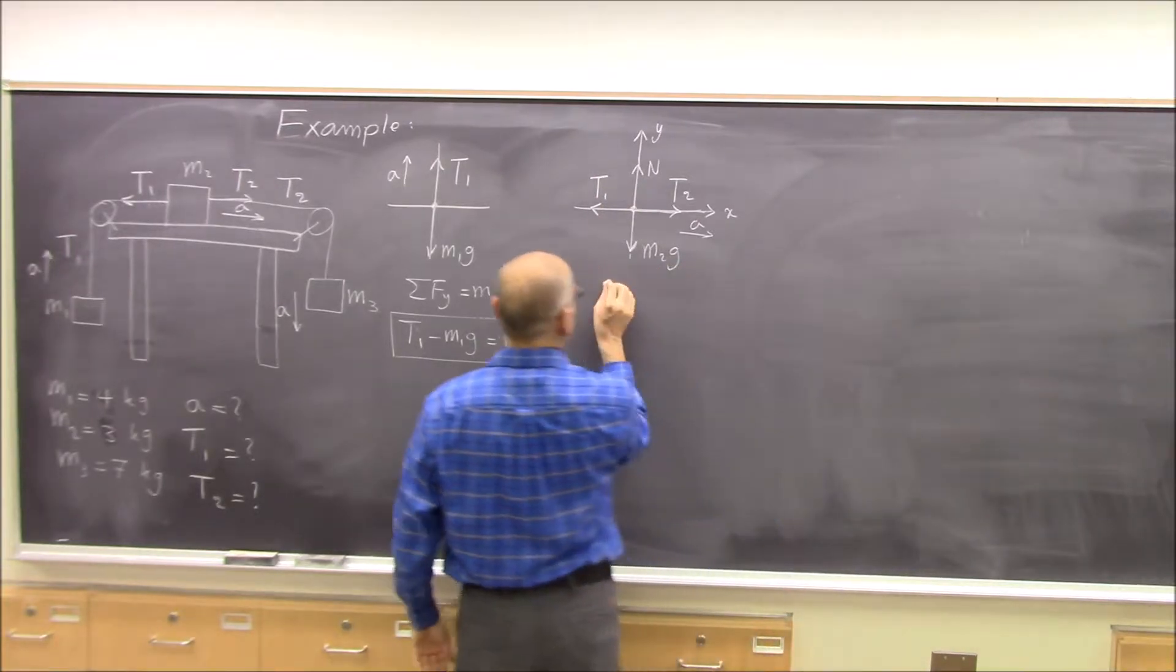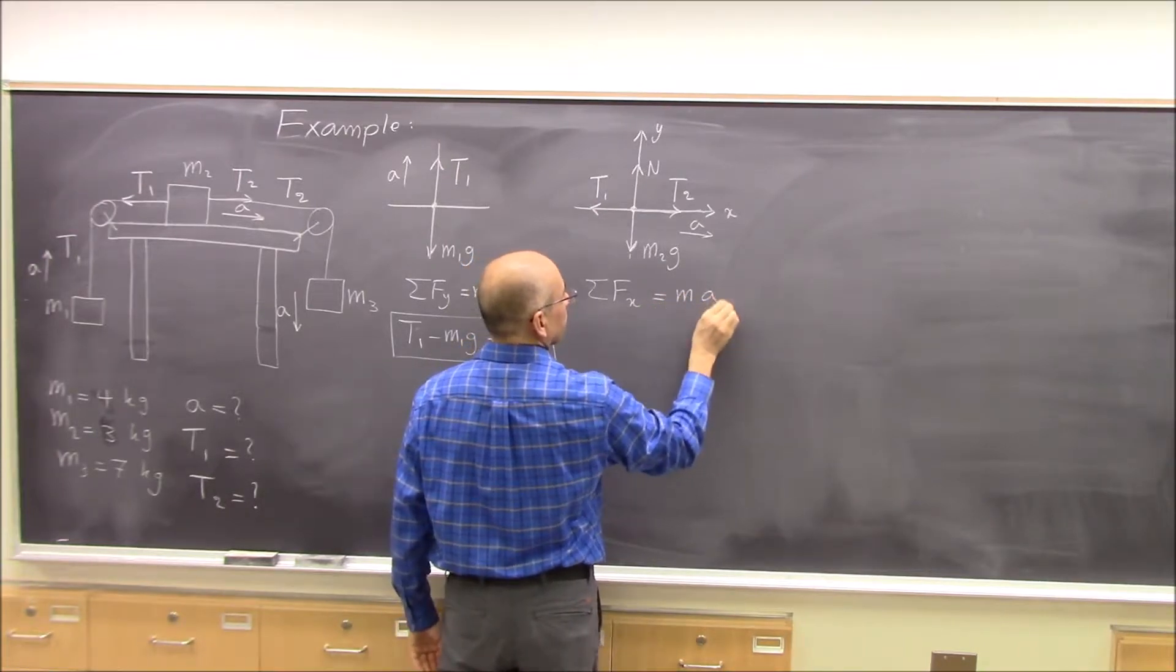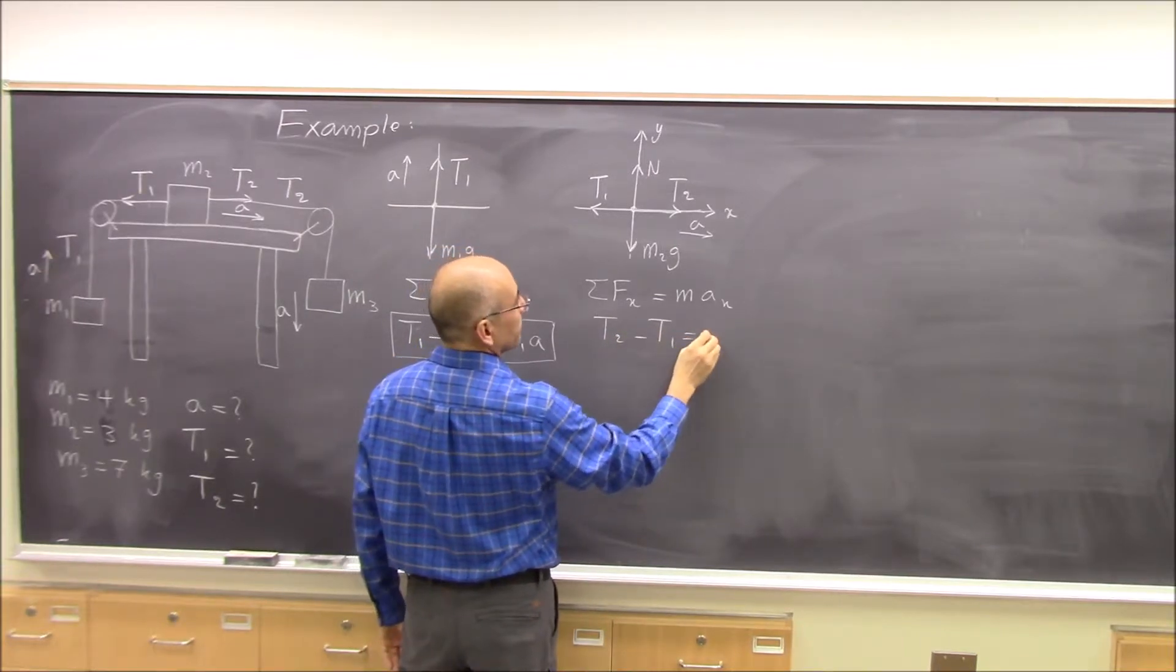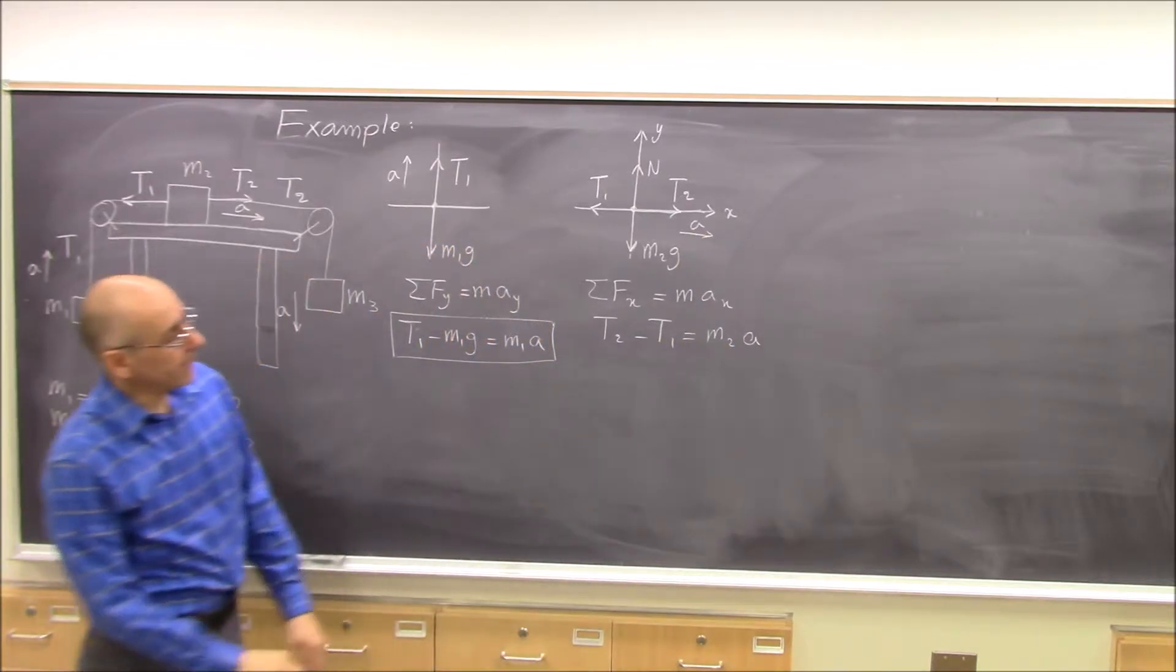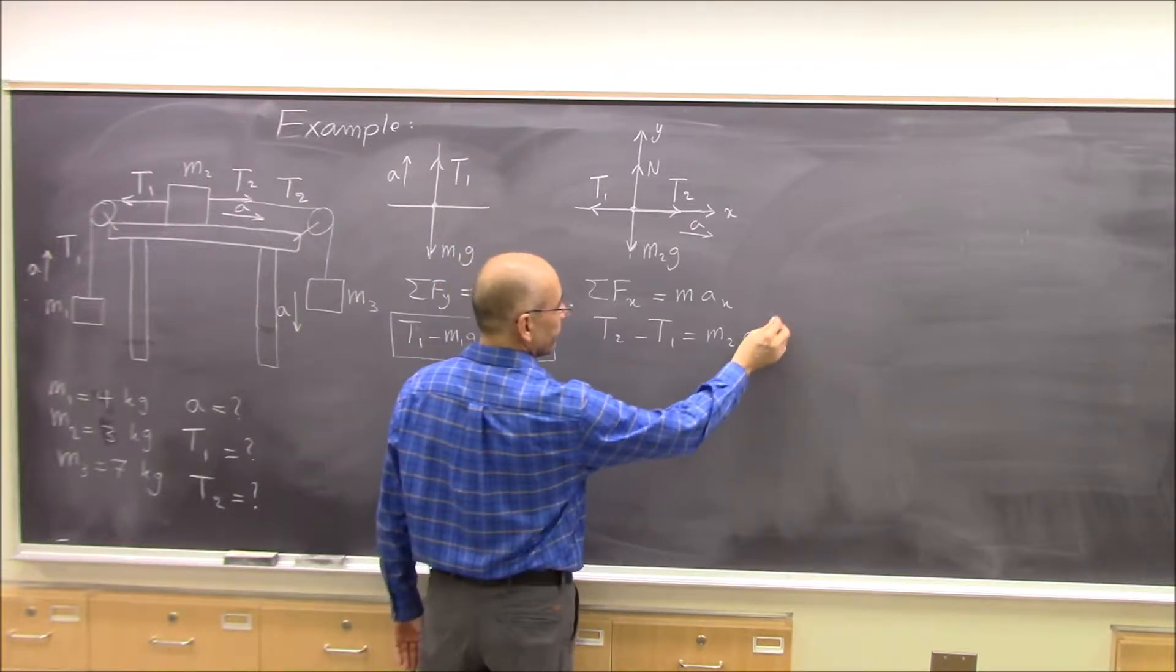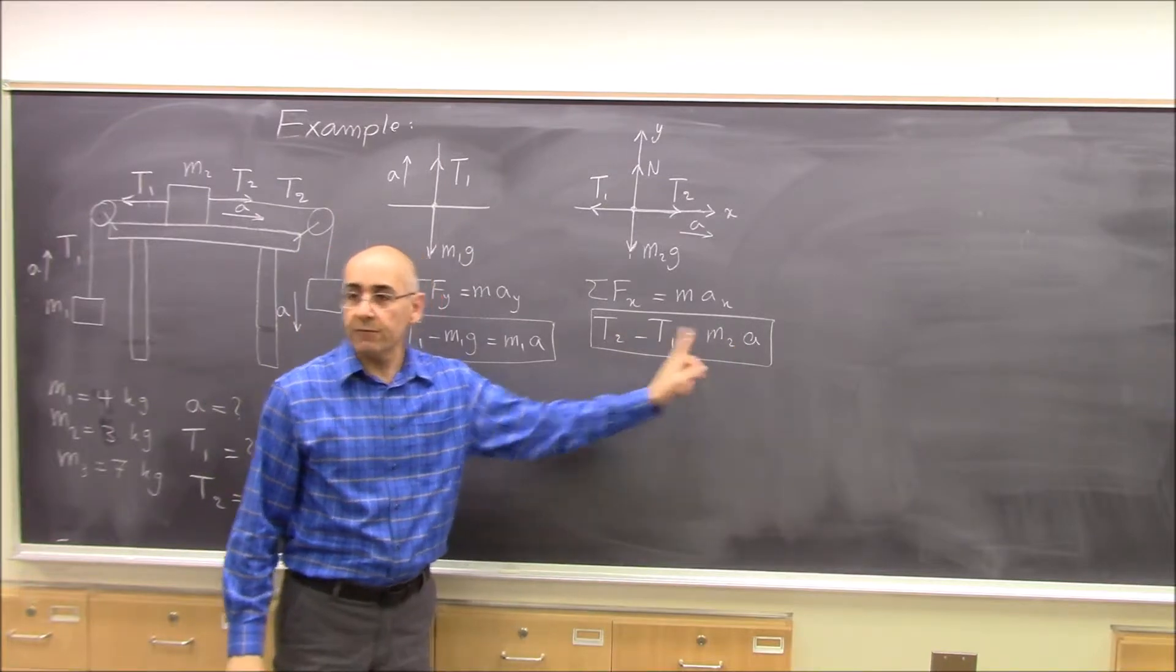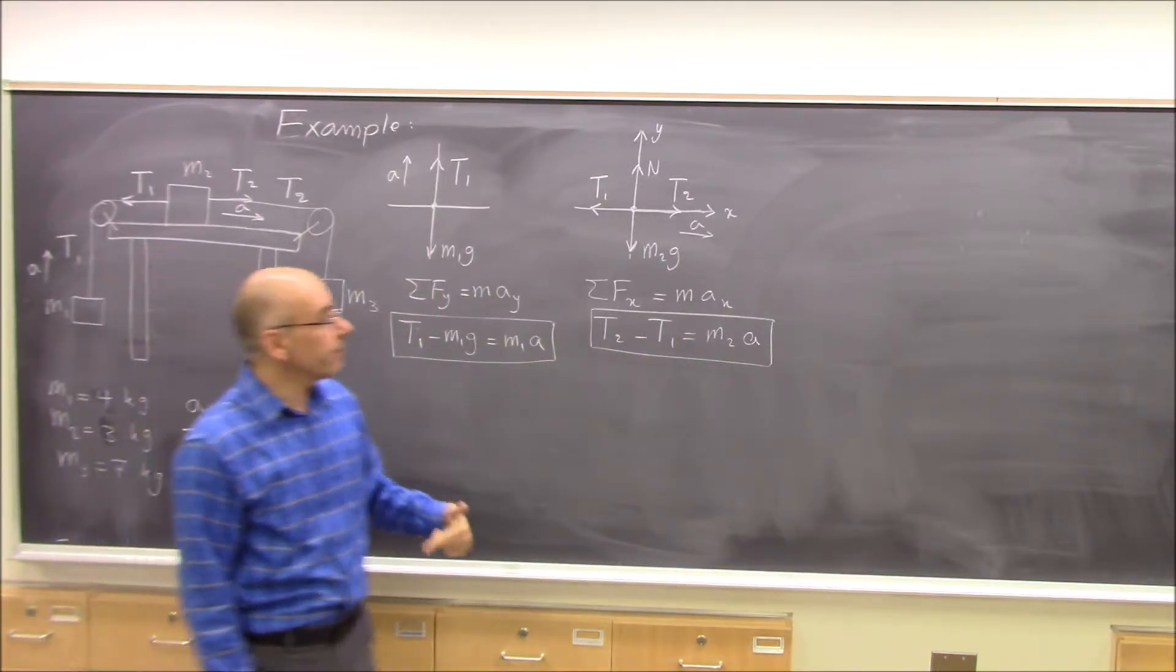So we do sum of fx equal to m ax for this one. Here t2 minus t1 equal to m2 times a. x component of a is just a. So that's again one equation, three unknowns. So we have two equations, three unknowns. We need to have another equation.